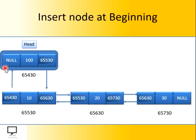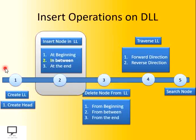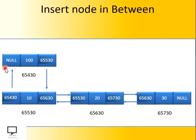These steps you supposed to follow to insert a node at the beginning. Now let's move forward for insertion of a node in between. You supposed to find out the proper position at which you can insert a node in between. You can insert after 100, after 10, after 20. You can't insert after 30, because that would belong to the category of insertion of node at the end of the list. The valid locations for in-between insertion are after 100, after 10, after 20.